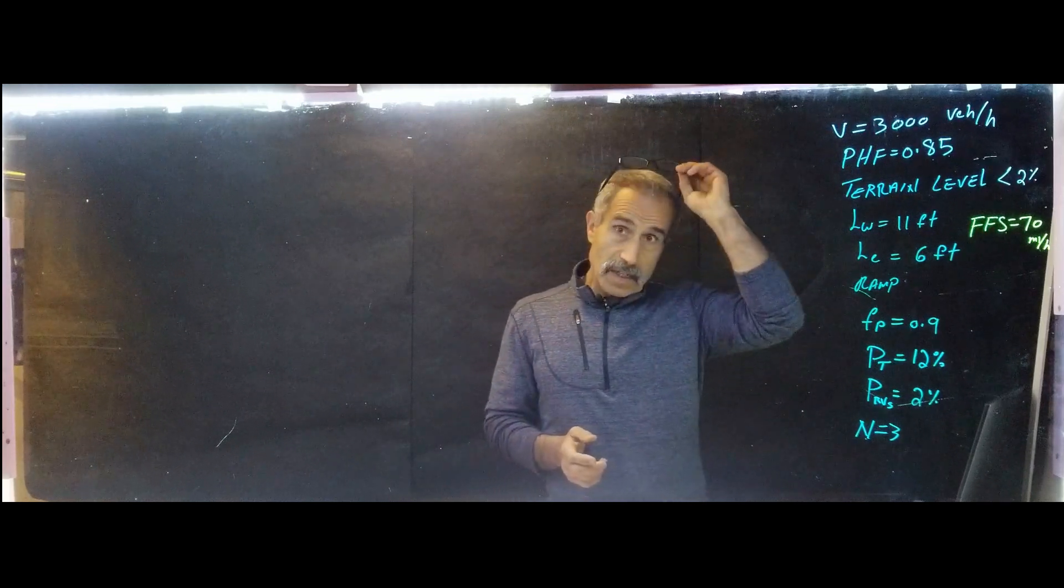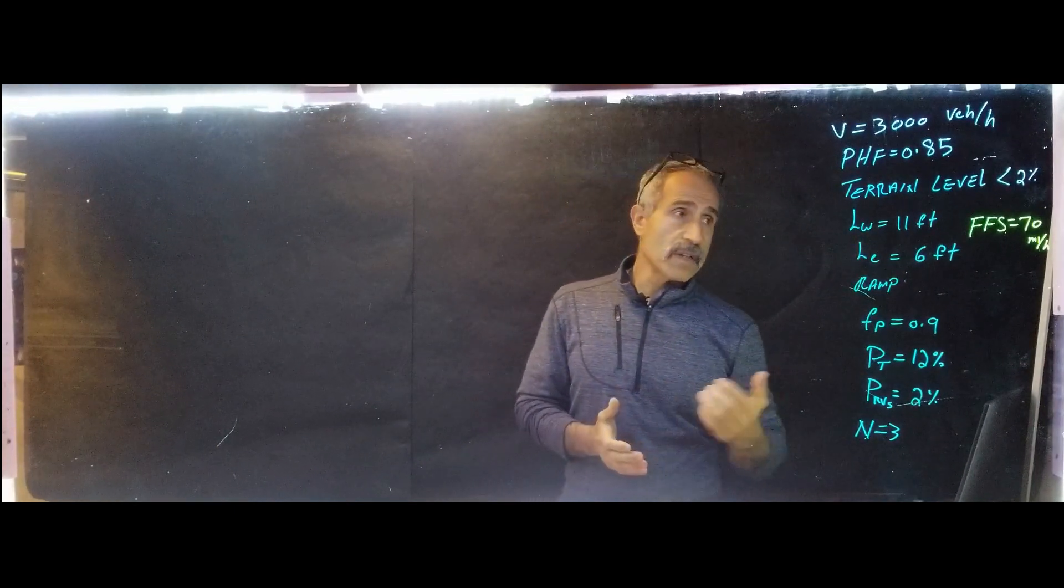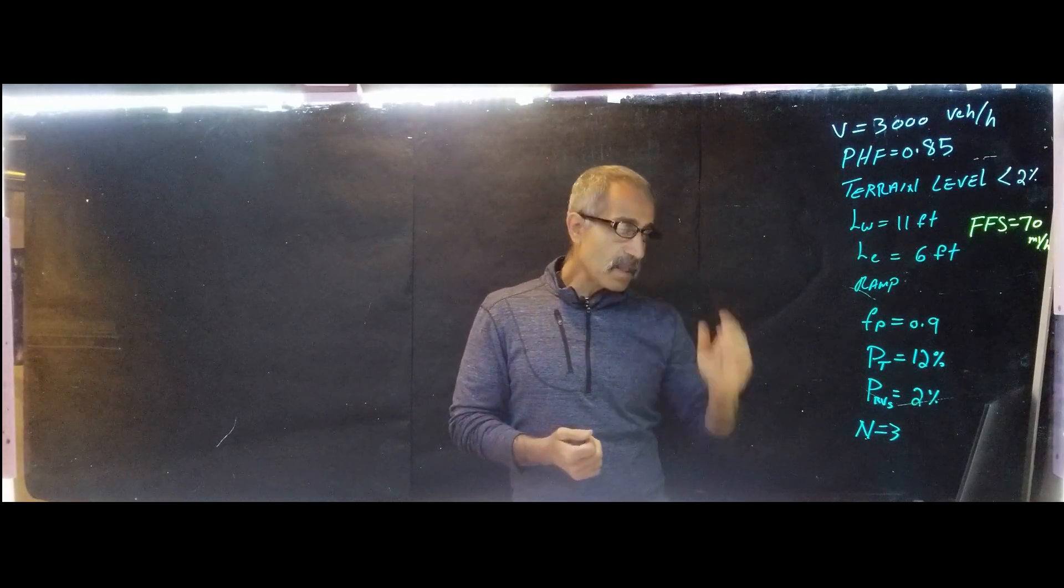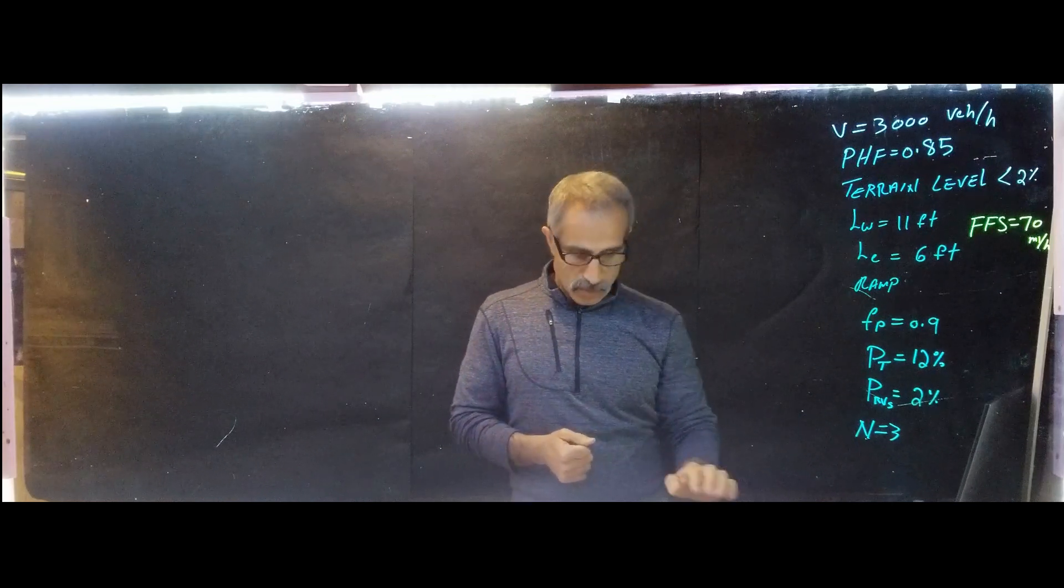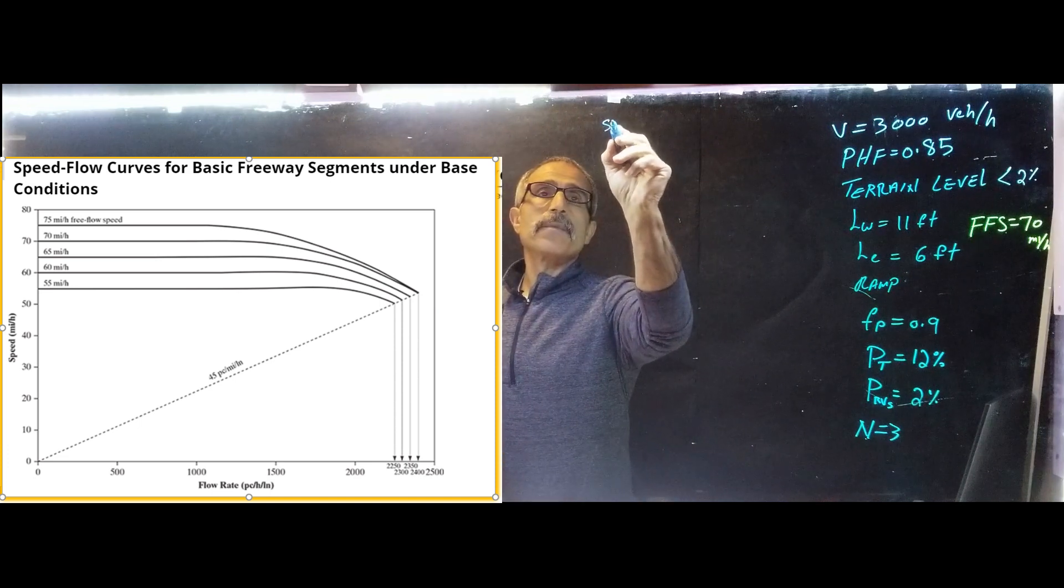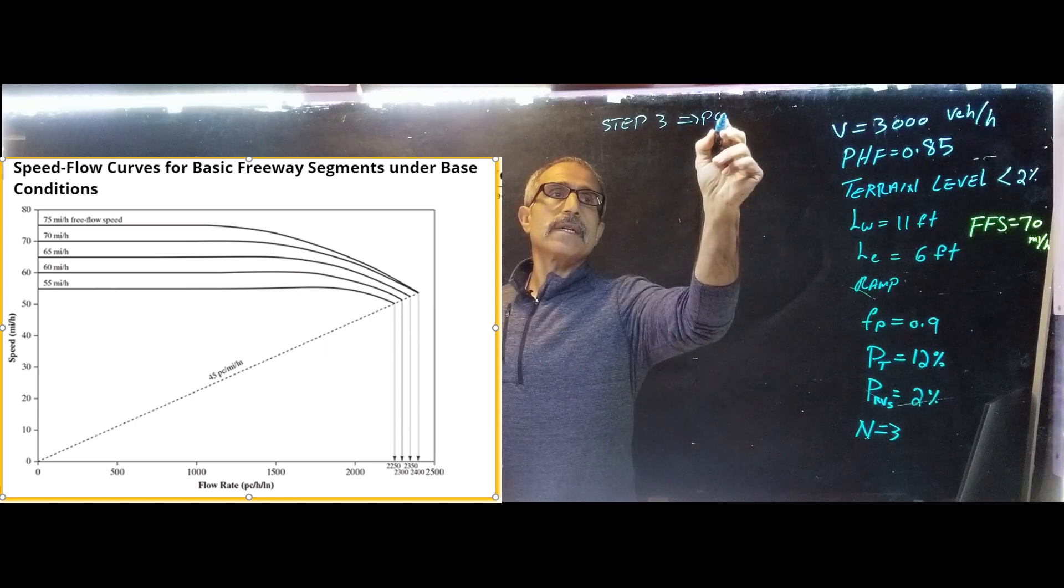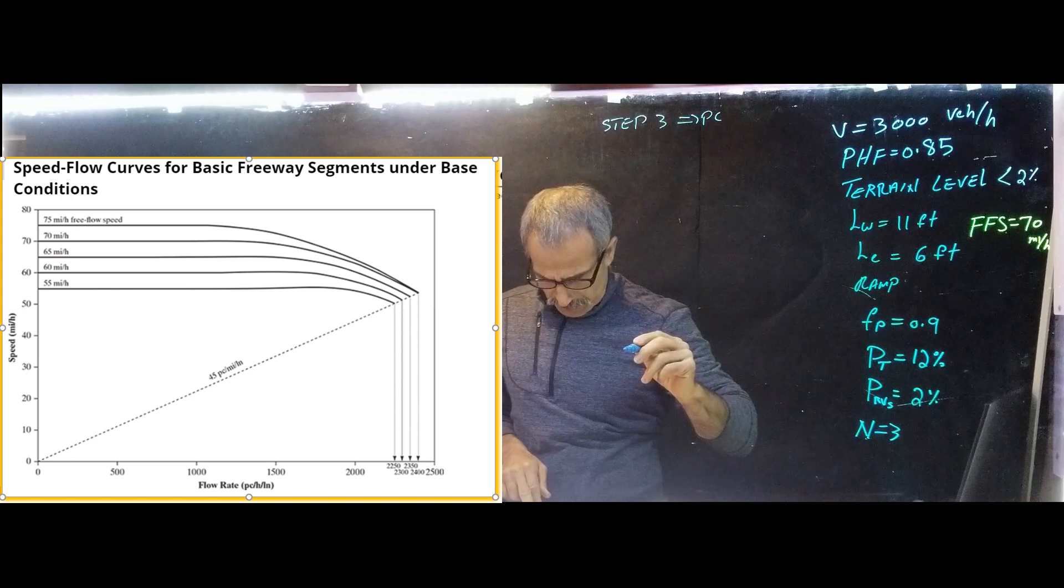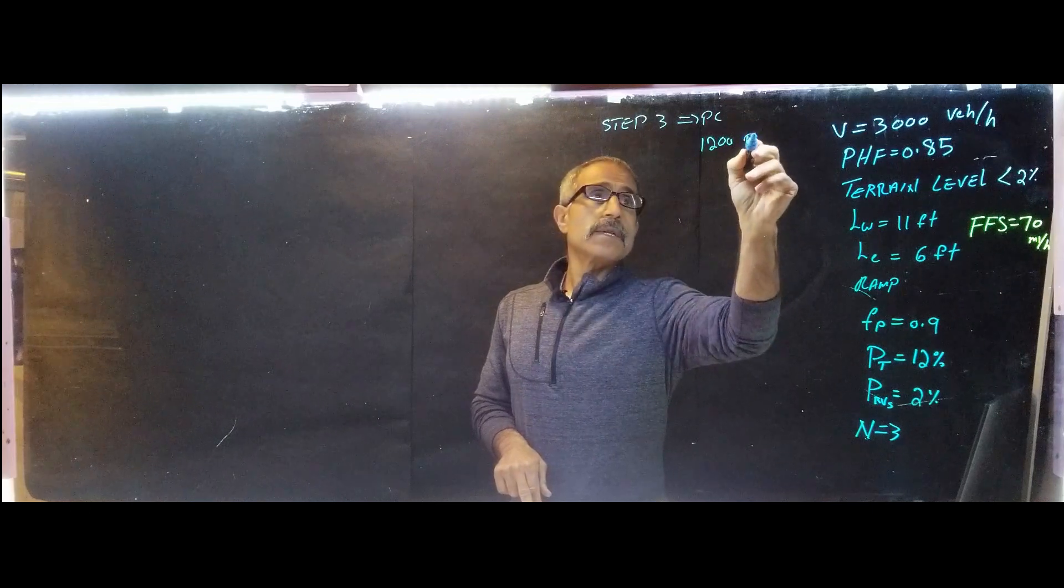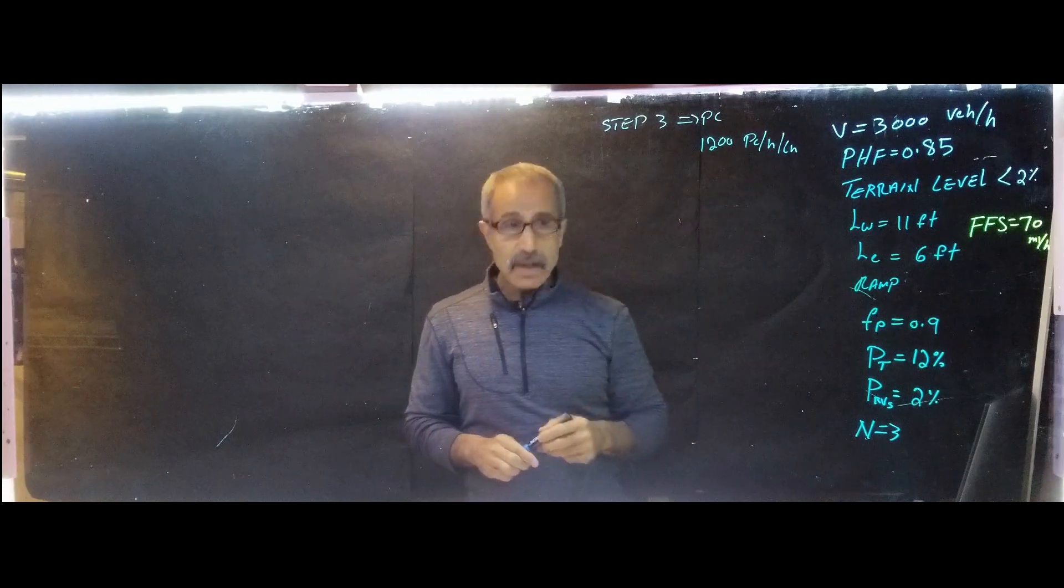So basically, what we have here, we go step by step. Step one is given, and step two also is given, because they give us FFS. FFS equals 70 mile an hour. So we're going to move into step number three, and if you go to step number three from the curve, we're going to find out that that's going to come out to, in step three, we're going to have our PCE per passenger vehicle comes with 1,200 vehicle. 1,200 PCE per hour per lane. So that's from the curve. And now once we have that, we're going to proceed to step number four.